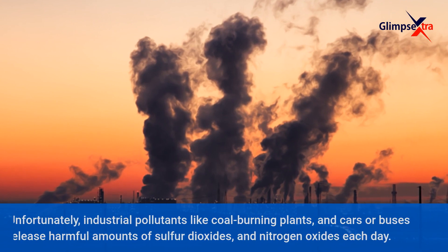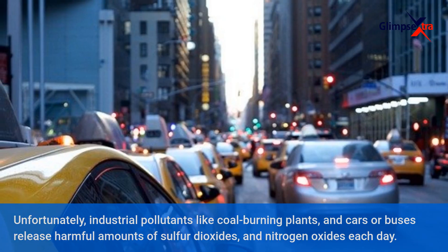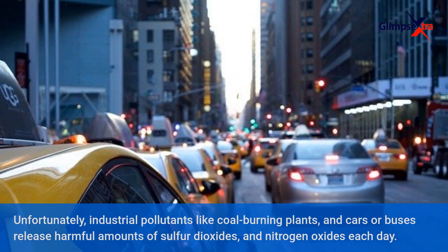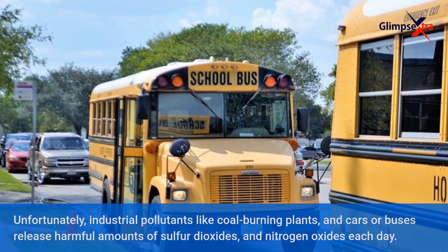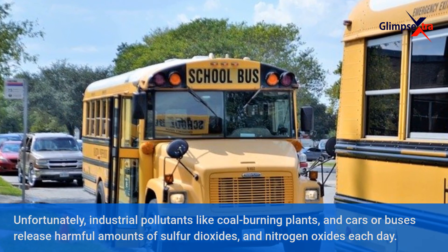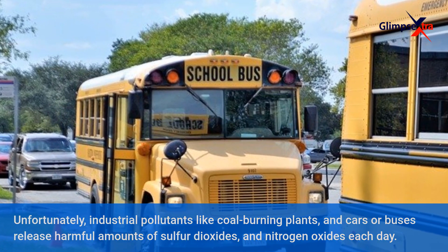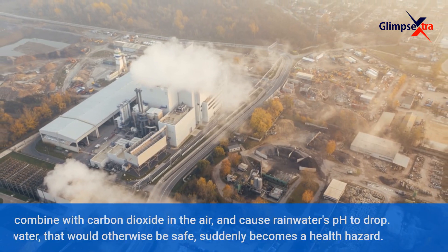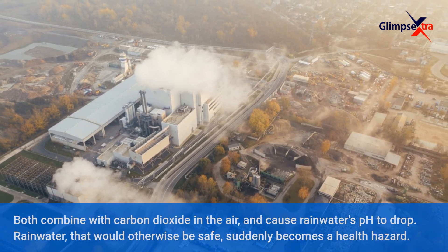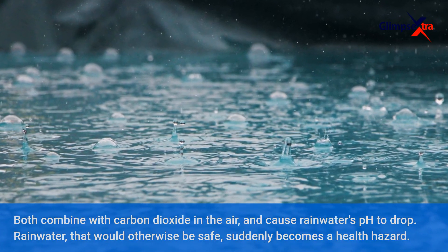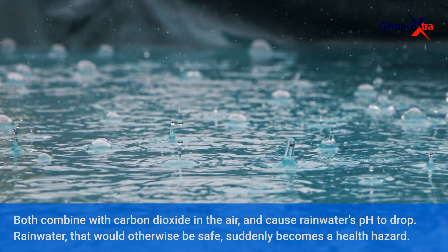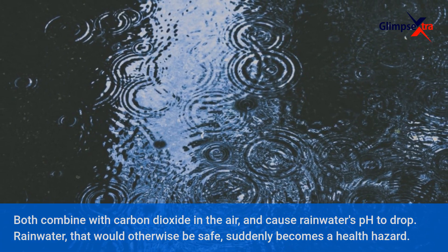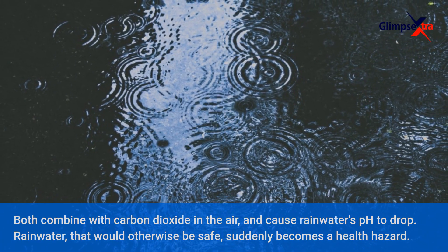Unfortunately, industrial pollutants like coal-burning plants and cars or buses release harmful amounts of sulfur dioxides and nitrogen oxides each day. Both combine with carbon dioxide in the air and cause rainwater's pH to drop. Rainwater that would otherwise be safe suddenly becomes a health hazard.